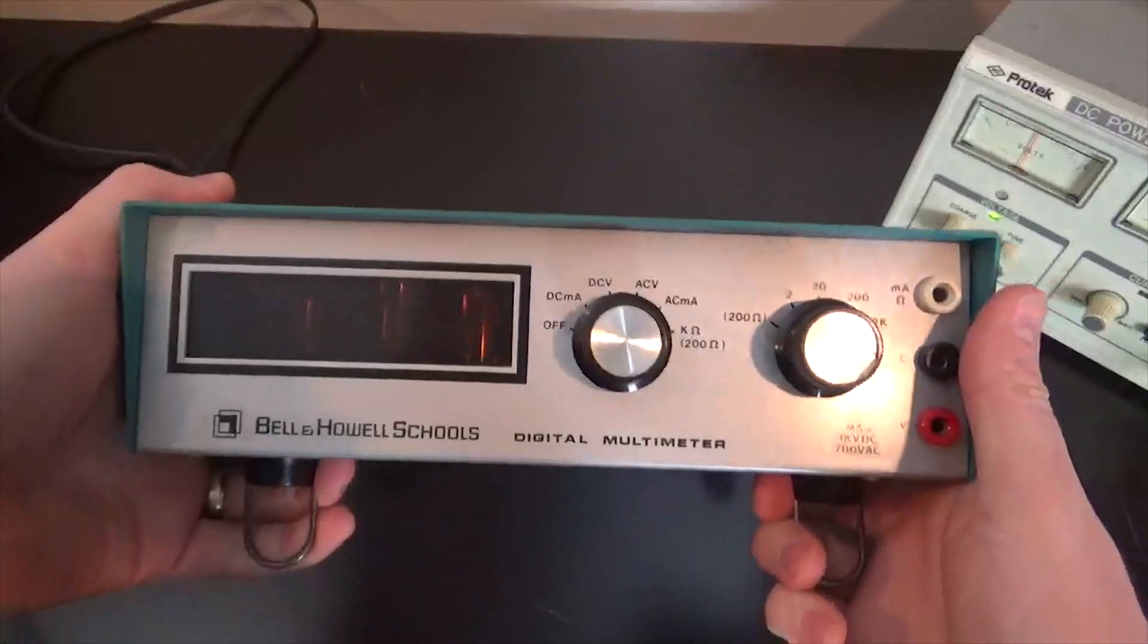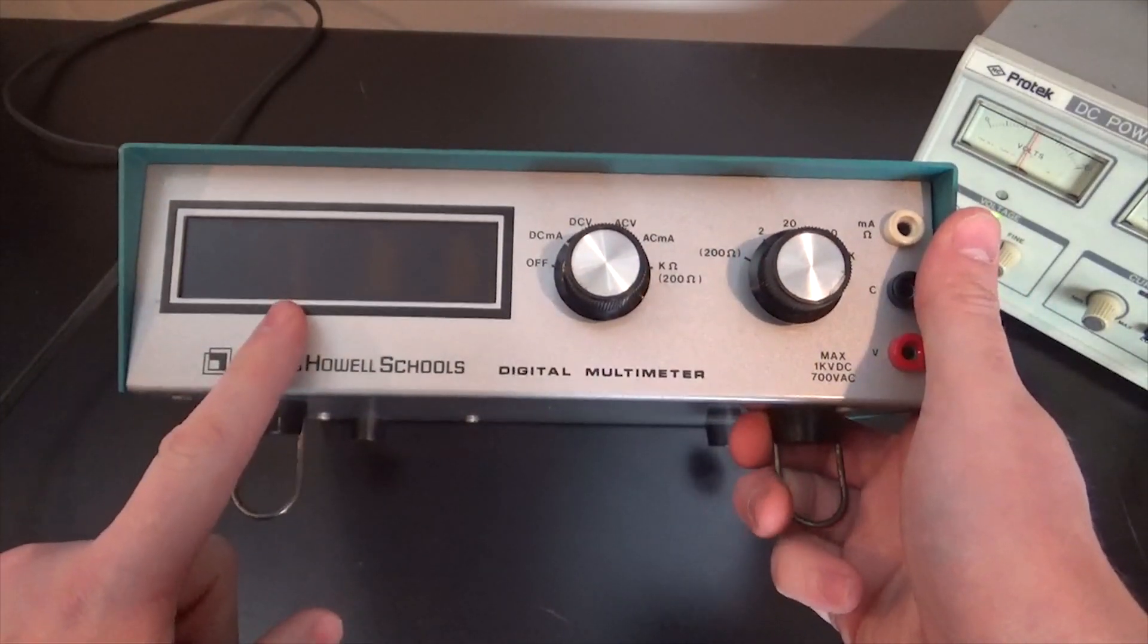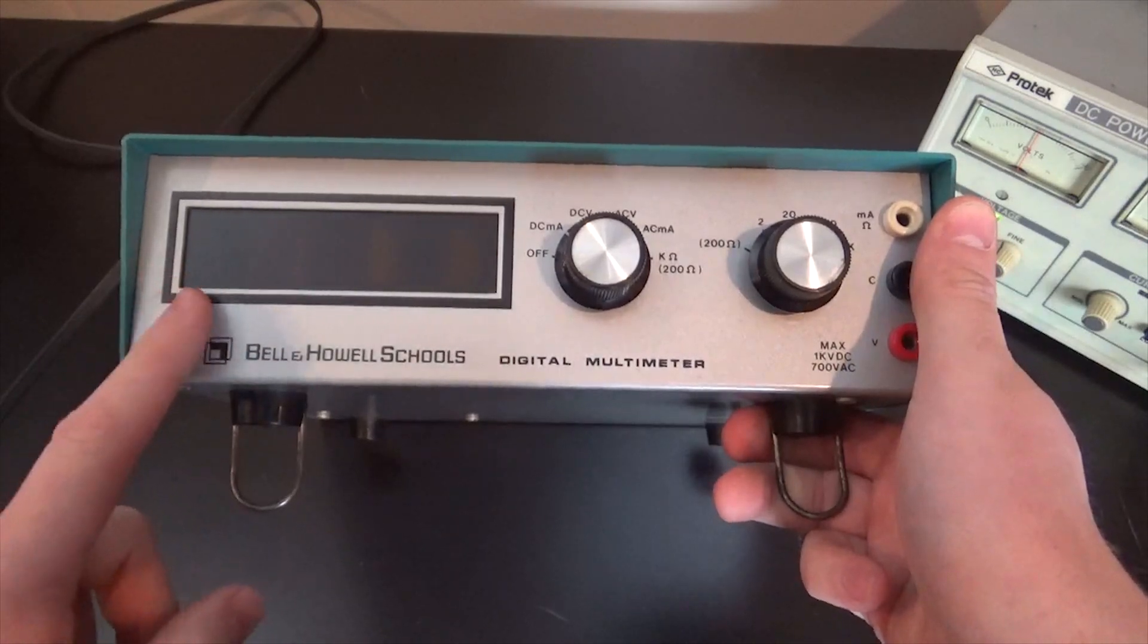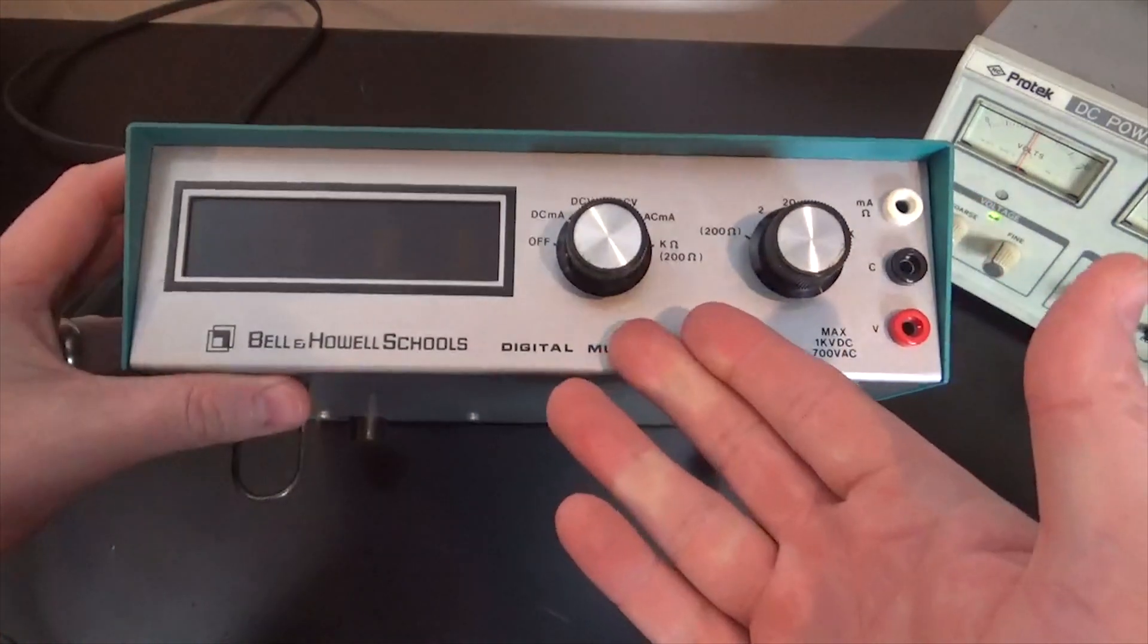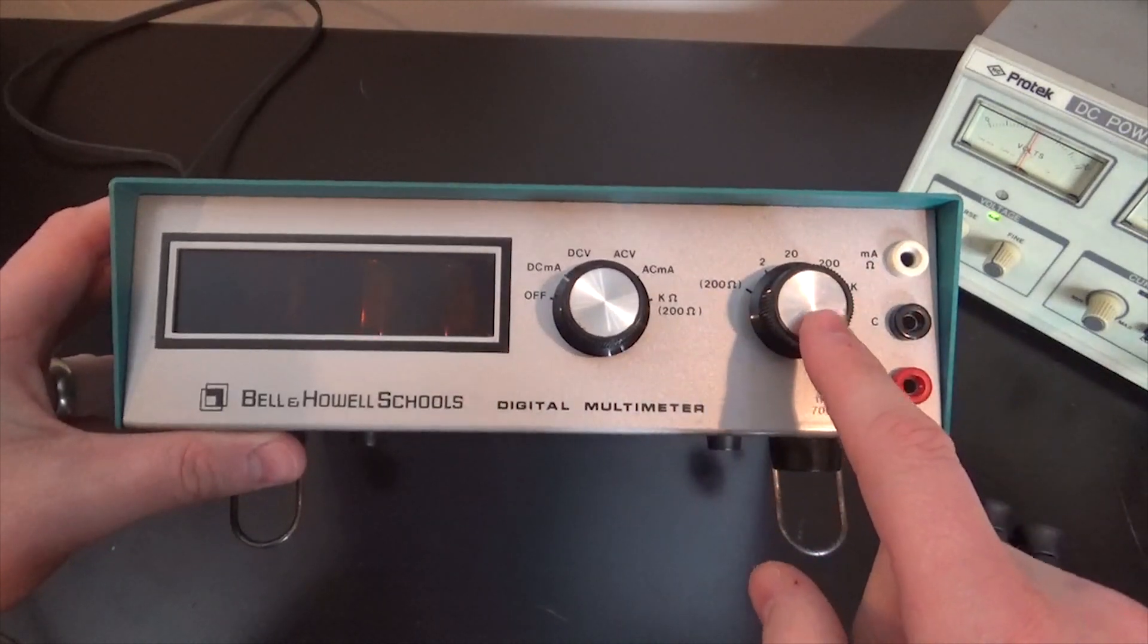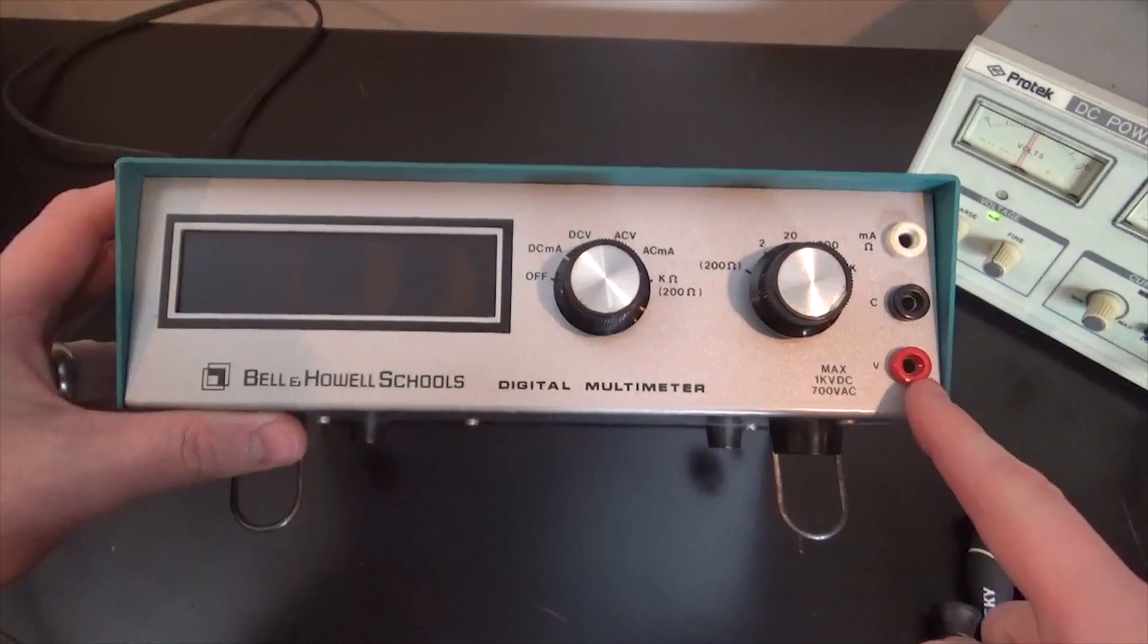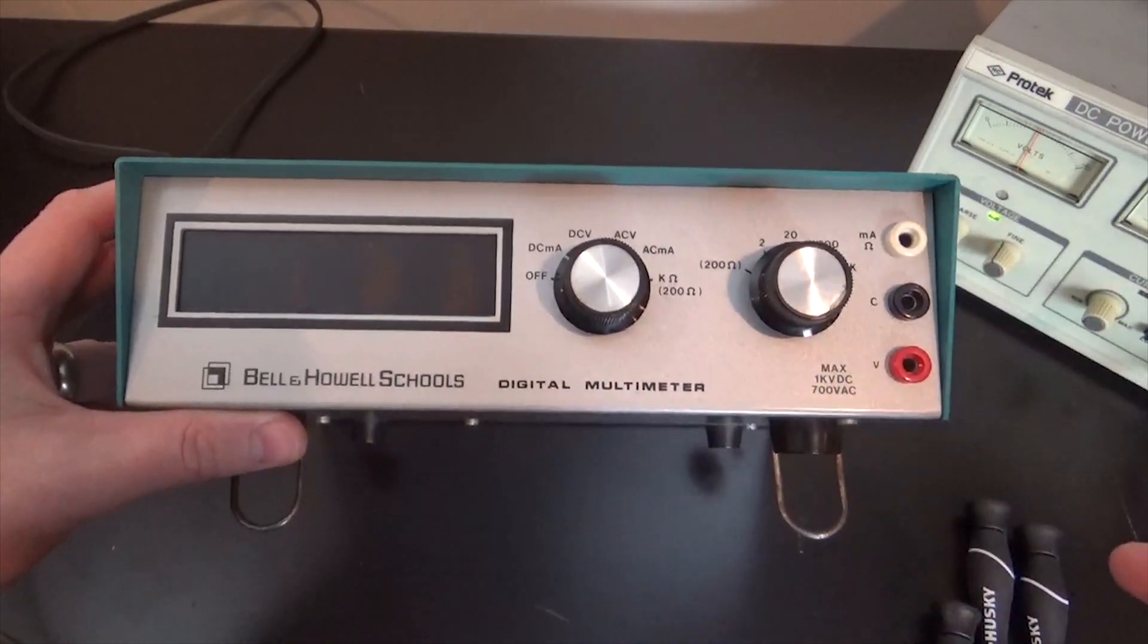Up front, as we saw before, we have our two Nixie tubes, our number one light, as well as our over light. Two dials to turn it on, select DC or AC, as well as your range. It'll also do continuity. And you have three plugs on the side for your banana clips.